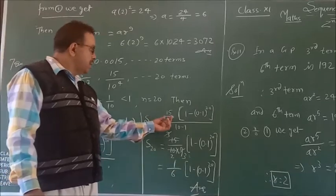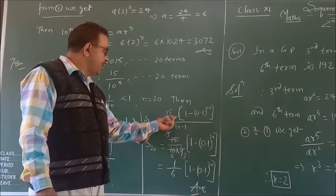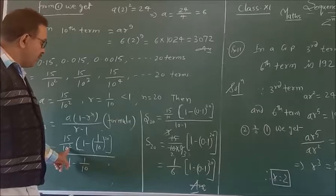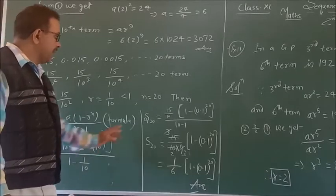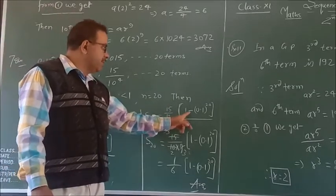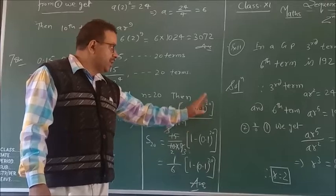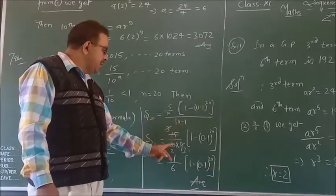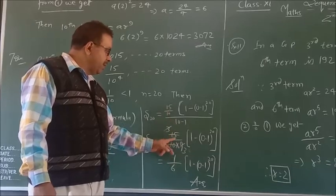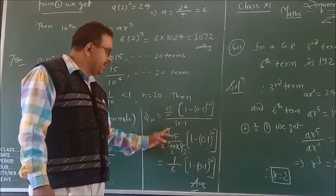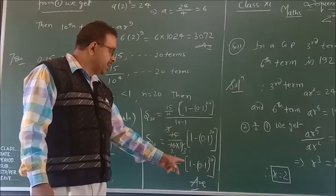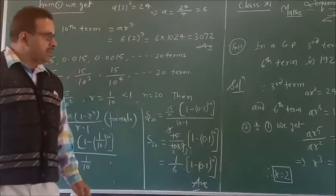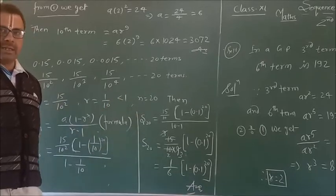After putting the values of a and r, we get S₂₀ = (15/10) × [1 - (1/10)²⁰] / (1 - 1/10). Simplifying, we get (15/10) × [1 - (0.1)²⁰] / (9/10), which gives (1/6) × [1 - (0.1)²⁰] as the final answer.